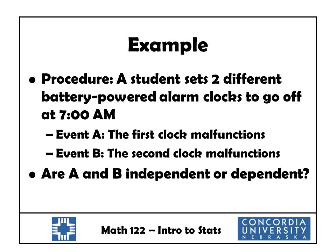Let's look at one last example of identifying independent or dependent events. A student sets two different battery-powered alarm clocks to go off at 7 a.m. Event A is that the first clock malfunctions, and event B is that the second clock malfunctions. Are they independent or dependent? Since they're battery-powered, there's really no connection between the two, so what happens to the first has no effect on the second, and so they are independent.